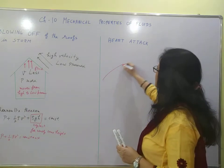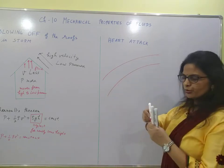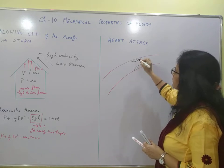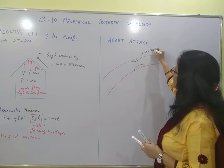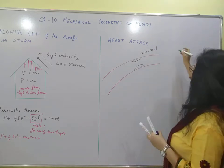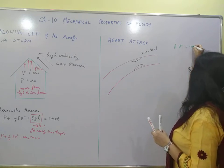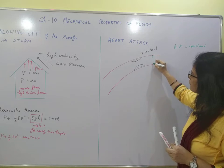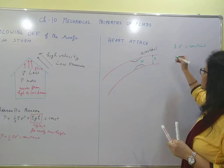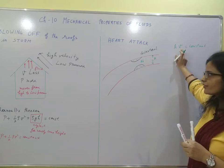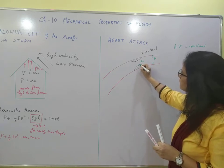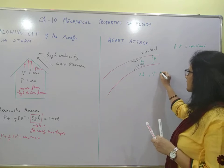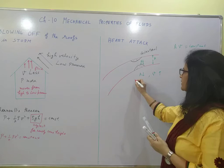Now let's consider the heart attack. We consider our artery, and the reason for a heart attack is generally deposition of cholesterol. By the equation of continuity — area of cross section multiplied by velocity equals constant — if the area decreases due to cholesterol deposition, the velocity will increase.